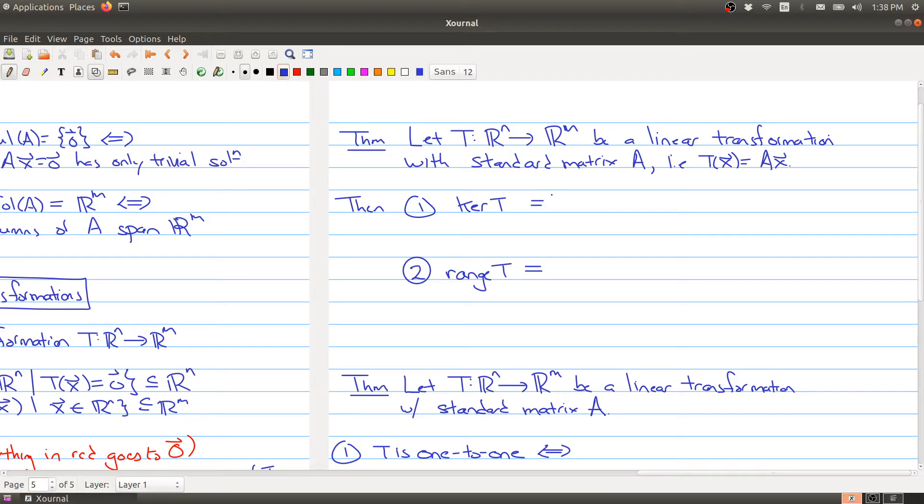So here we have a nice result: if you look at the kernel of this map, this is all the x such that when you plug x into your function, you get zero. But this is the same thing as multiplying x by A and getting sent to zero. But that's exactly the same thing as saying the null space of A. So you can talk about the kernel of your linear transformation, or you can talk about the null space of your matrix, but they're really the same space.